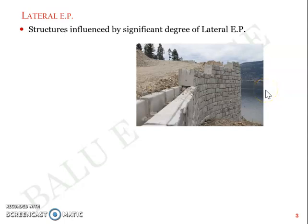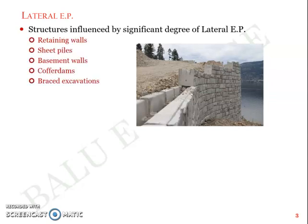The structures influenced by a significant degree of lateral earth pressure include retaining walls, sheet piles, basement walls, cofferdams, and braced excavations. Cofferdams are structures built on river beds while constructing pillars and piers. Their predominant function is to divert water and ensure that construction activity is carried out in dry soil. That's one example of a structure influenced by lateral earth pressure.